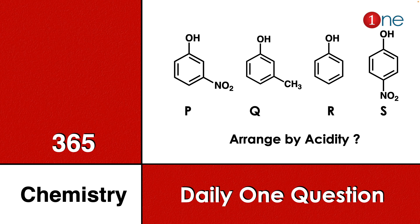Welcome to One Chemistry. This is the 365 Chemistry series — one question daily for you. Four different phenols are given: P is meta-nitrophenol, Q is methylphenol, R is plain phenol, and S is para-nitrophenol. You have to arrange all four compounds by acidity.